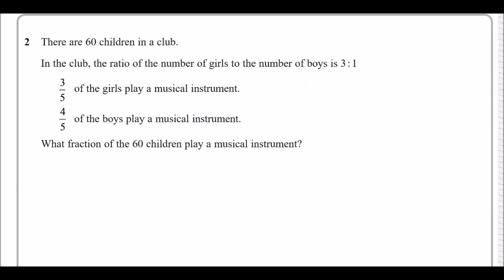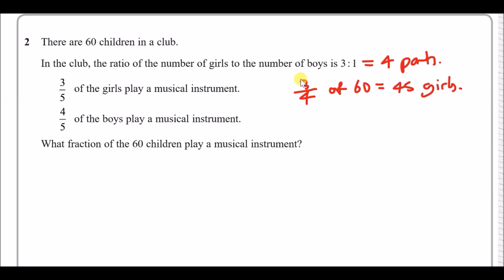Number two: there are 60 children in a club. The ratio of girls to boys is 3 to 1. Add up the parts: 3 plus 1 equals 4 parts total. So 3 out of 4 parts are girls: 3/4 of 60 equals 45 girls. That leaves 1/4 of 60 which is 15 boys. In your calculator just put 3 over 4 times 60.